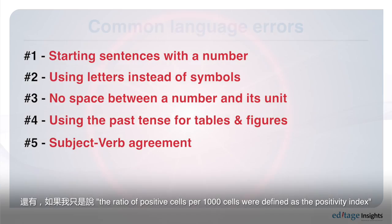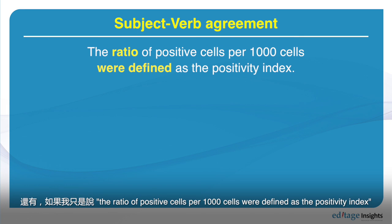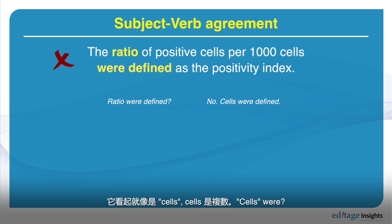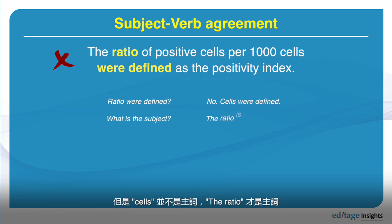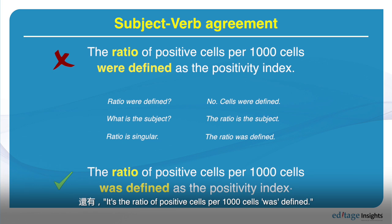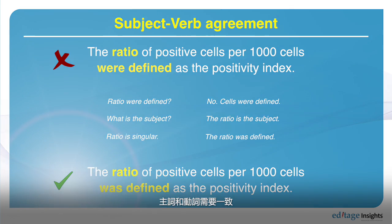For example, 'the ratio of positive cells per thousand cells were defined as the positivity index' — 'cells' looks plural, so you might write 'cells were,' but cells is not the subject. The ratio is the subject. So the correct form is: 'the ratio of positive cells per thousand cells was defined as the positivity index.' The subject-verb needs to match.